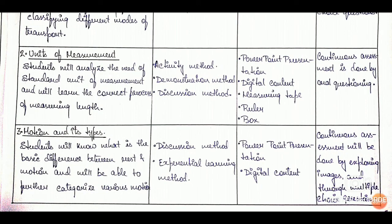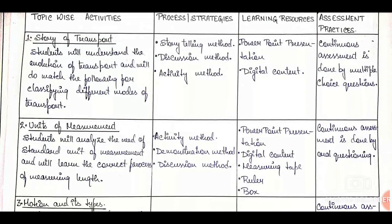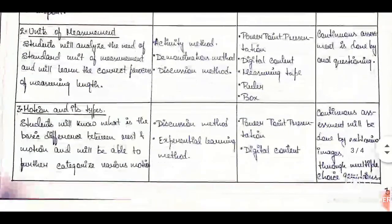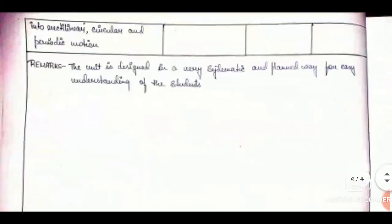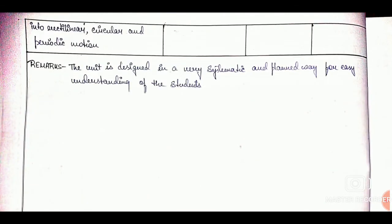Previously we saw that this chapter was divided into three lessons. So in the unit plan table, I have made three major concepts and accordingly written all the activities and resources required. We end our unit plan with proper remarks. Here I have written: 'The unit is designed in a very systematic and planned way for easy understanding of the students.' You can write whatever you like about the unit or whatever you think must be added.